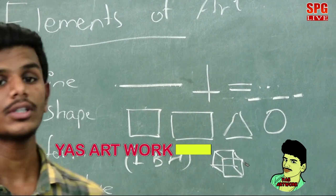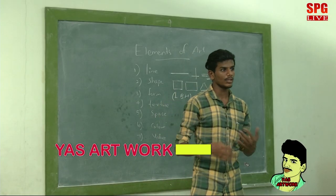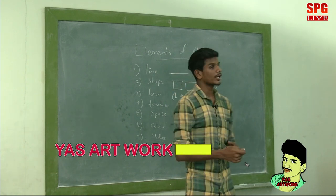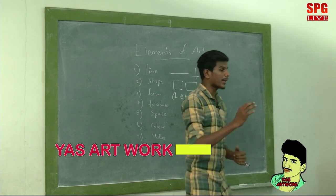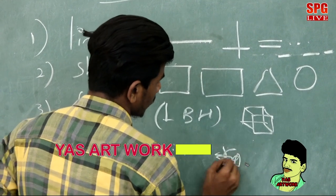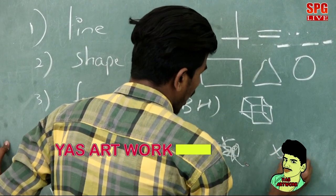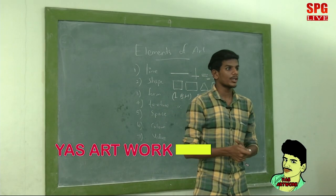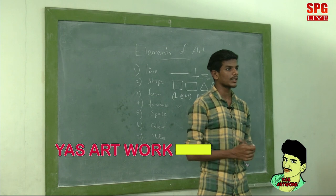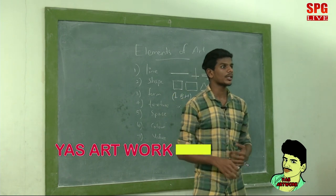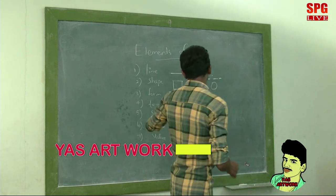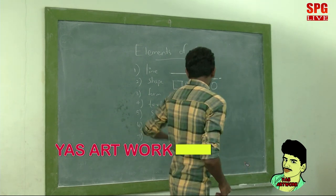The fourth element is texture. Texture can be seen in painting and sculpting. Examples include dotted texture, scribble texture, and cross texture. As a painting artist, you can feel and see texture.